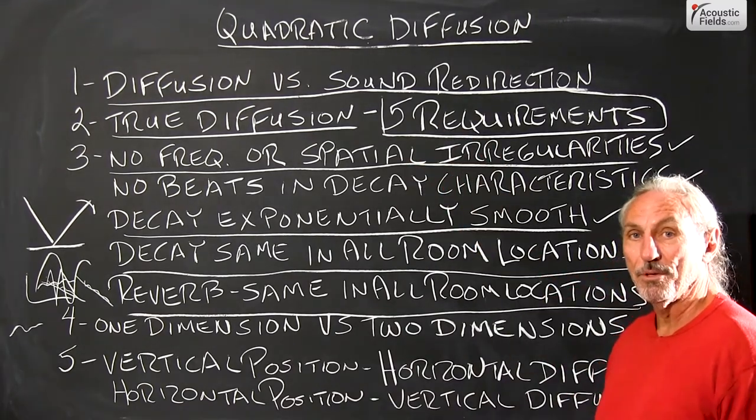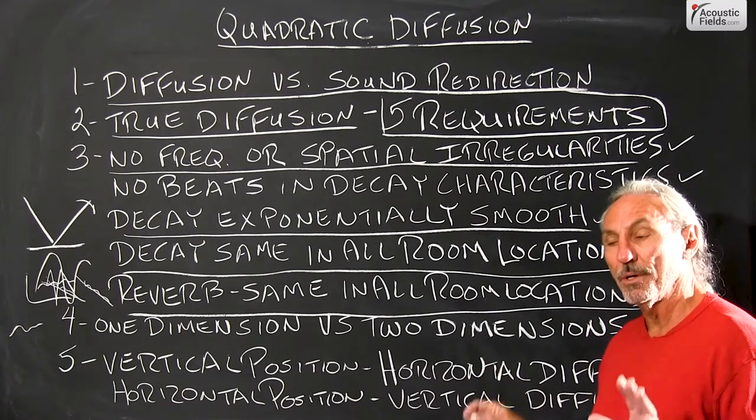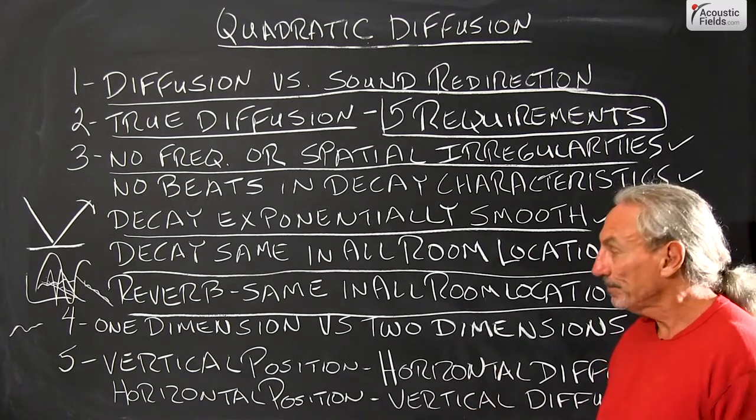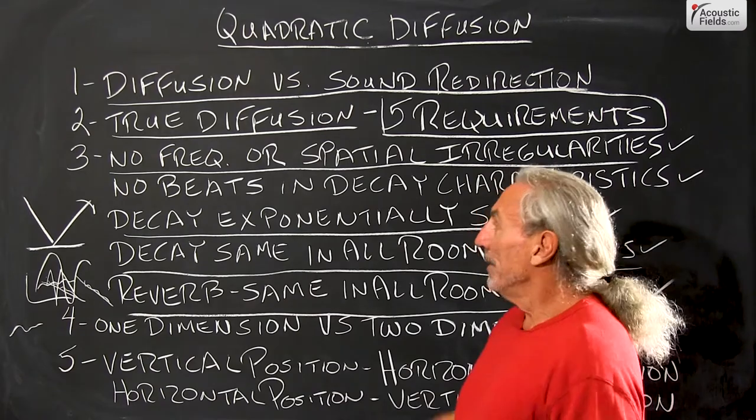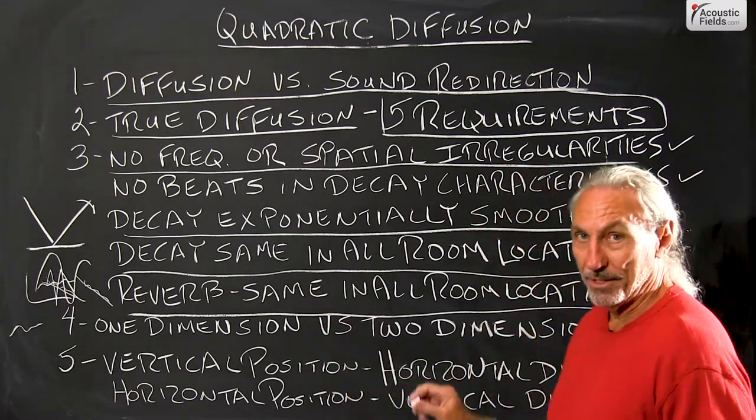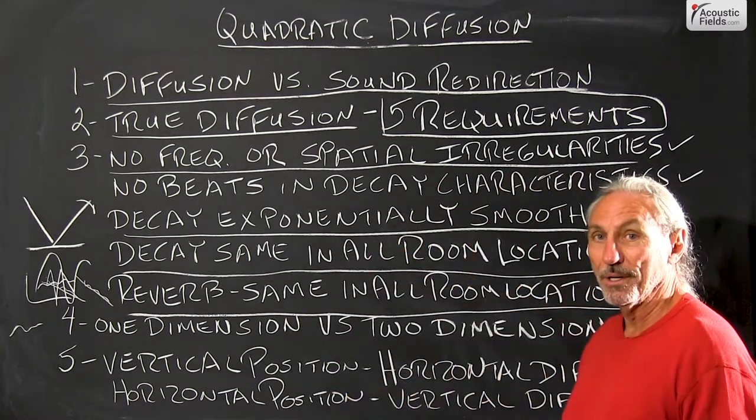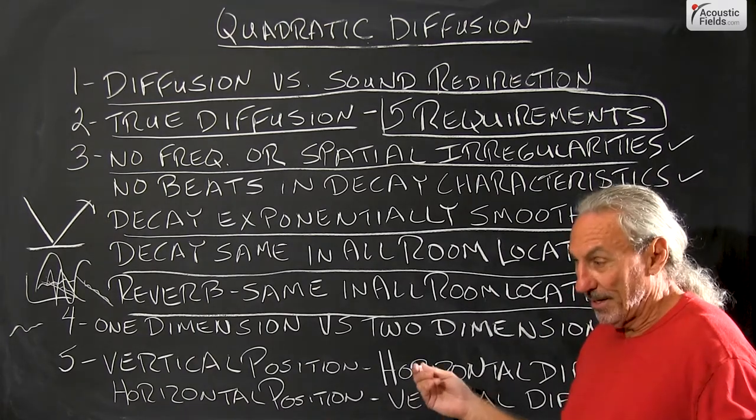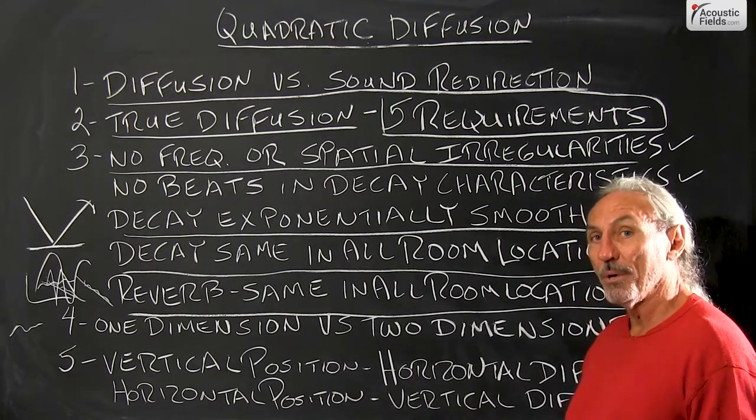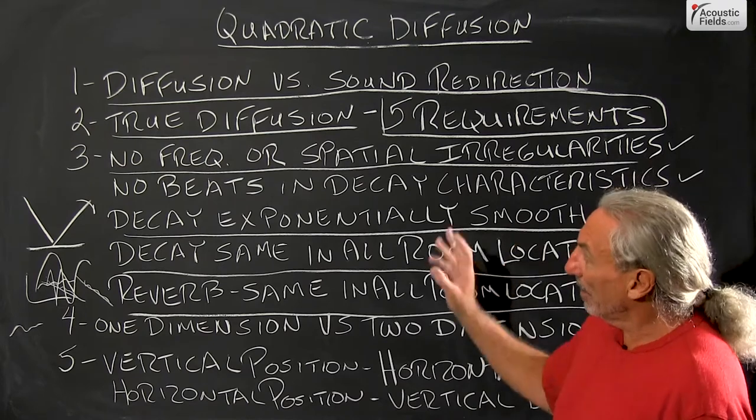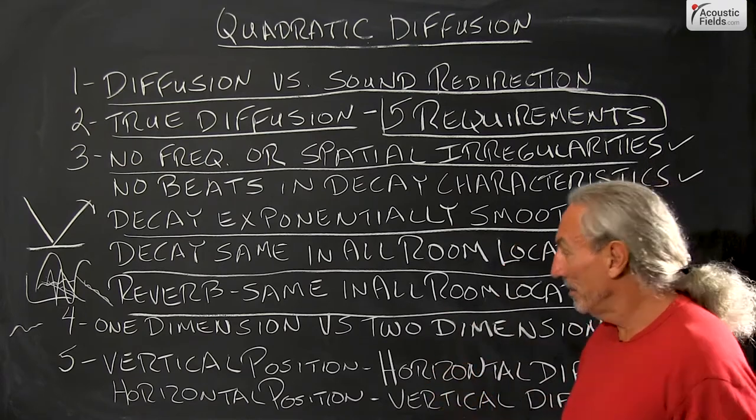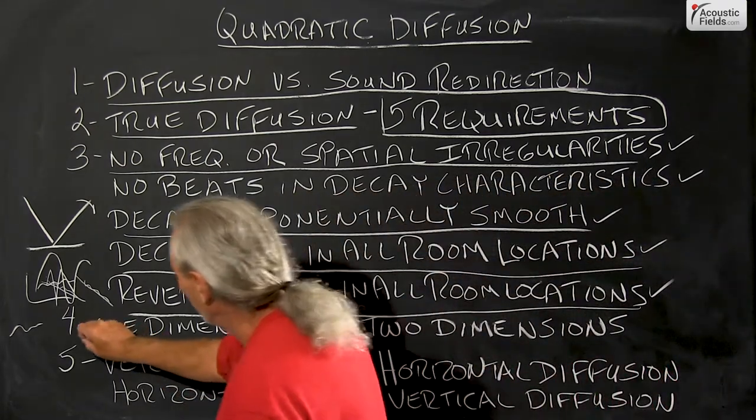So we have these five criteria that must be met for diffusion to occur. If you don't have these five, you don't have true diffused sound field in your room. So the only diffusion type that will give you and meet these five criteria is quadratic. It's just the way it is. That's all we have right now.